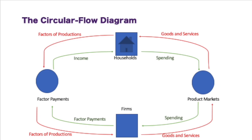There are two markets in this circular flow model. This being a very simple circular flow model, you have the product market and firms. The important thing to understand is who is supplying and who is demanding goods and services and factors of production. Firms supply goods and services to households, while households supply factors of production to the firms.